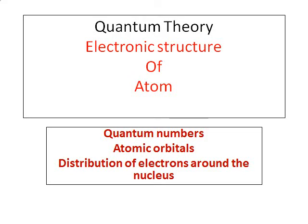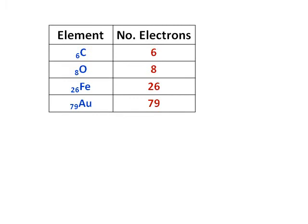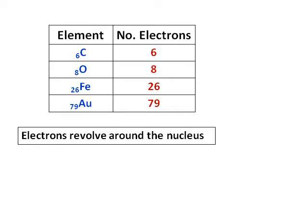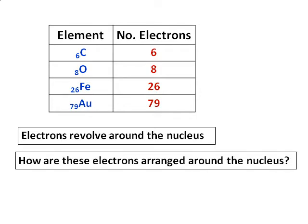Let's learn about quantum theory and continuing with the electronic structure of atoms. In this, we are going to learn about quantum numbers, atomic orbitals, and how the electrons are distributed around the nucleus. We know different elements have different electrons, and we are going to learn how these electrons are arranged around the nucleus, because they revolve around the nucleus.